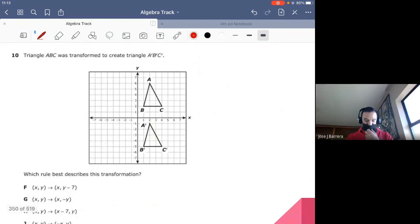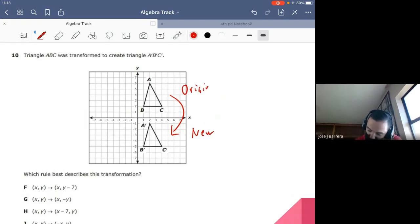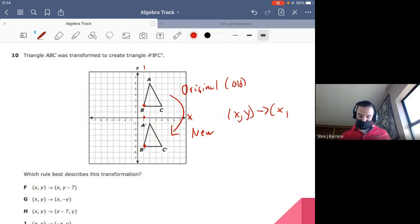Second question, triangle ABC was transferred to create triangle ABC with the little line. So this is our new, and this is the original, or old. Which rule best describes this transformation? So, if you can see, our X axis stayed the same. X is one. X is still one for it, right? So, from X, Y, our X stayed the same. So we don't have to move X anywhere.